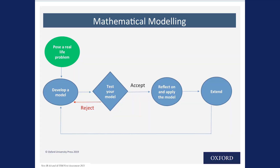Let's move on to the Mathematical Modelling Flowchart, which is a very important process for students to understand when they're mathematically modelling. We want to teach students explicitly this flowchart: they start off with a real-life problem, develop a model, and once they test that model, they decide whether to accept or reject it. If they accept the model, they reflect on, apply, and extend it. If they reject it, they go back and redevelop another model. This is included in the 30-hour toolkit to help students understand the mathematical modelling process.